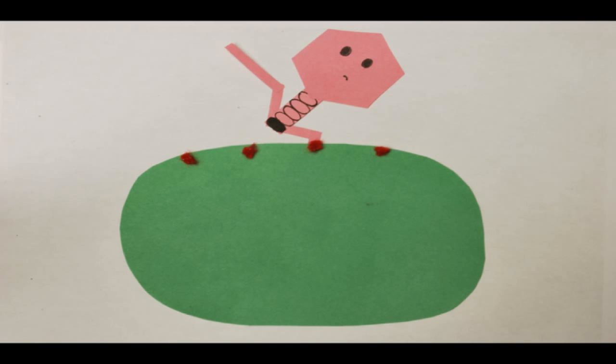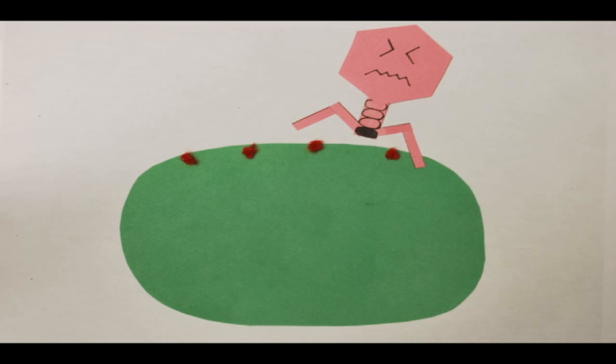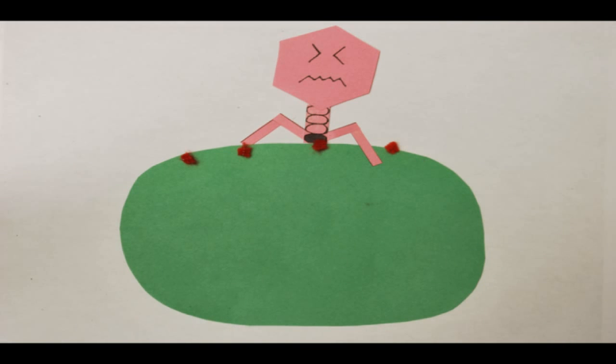This is usually where the cell membrane and cell wall are close together. When the T4 finds a good site, the phage contracts its tail sheath and injects its viral DNA.